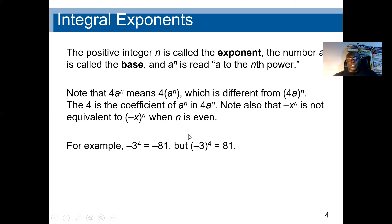An example: if I have negative 3 to the power 4, it means I'm going to multiply 3 four times. The negative sign will not affect the power because there's no parentheses. So we have the negative, and 3 times 3 times 3 times 3, which gives 81.